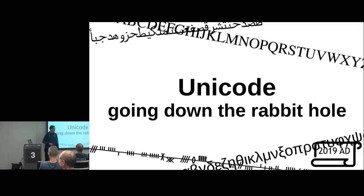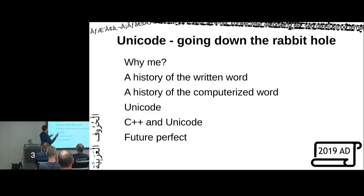I'm going to talk to you about Unicode, and we're going to go down the rabbit hole. I've made all the slides indicate what year we're on, because Unicode spans a couple of millennia, so it's probably a good idea to keep track of what year we're in for any given information. Some things might not apply yet because they haven't been invented. So right now we're in 2019.